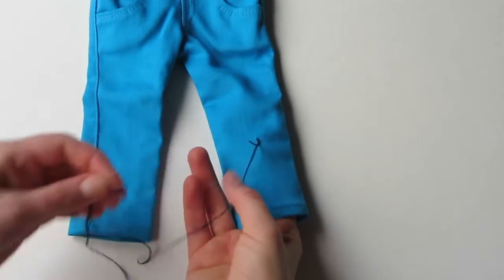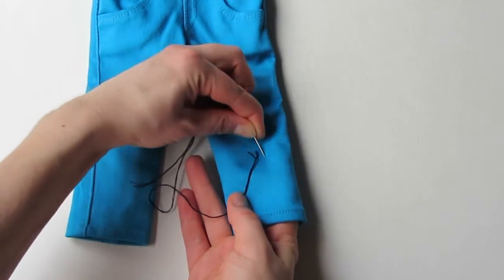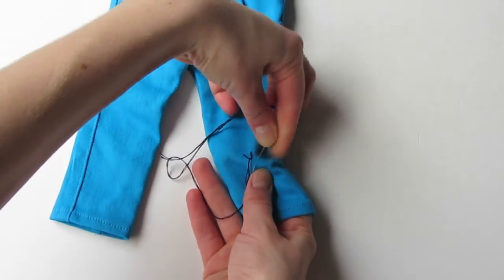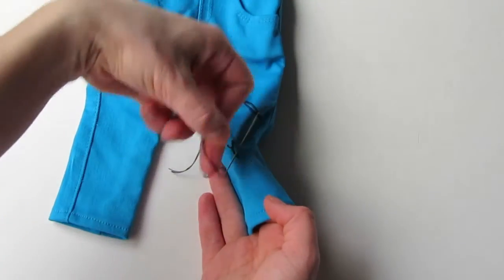Make your second stitch in the same way, only this time go off to the other side. Wrap the thread again and pull it through.